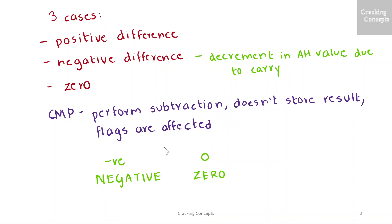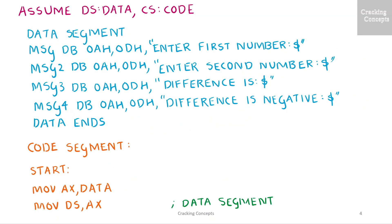In the program that follows, all the instructions related to the case where the difference is negative are denoted by the label 'negative', and the instructions related to the case where the difference is zero are denoted by the label 'zero'. Let's start coding now.